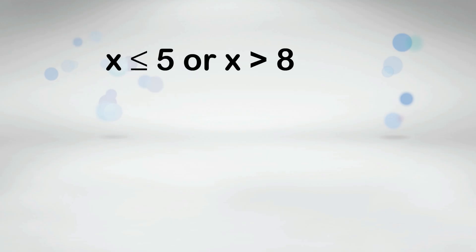X is less than or equal to 5 or X is greater than 8. This inequality will point in two different directions because it uses or.